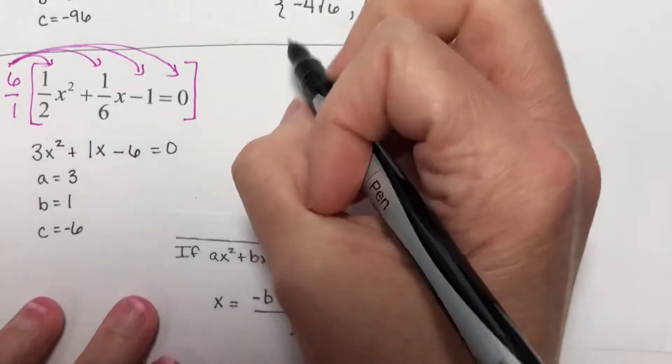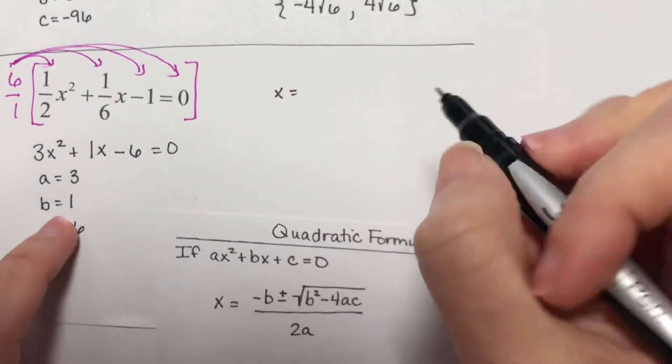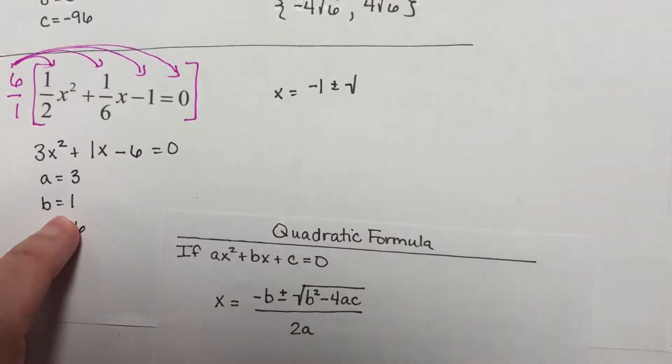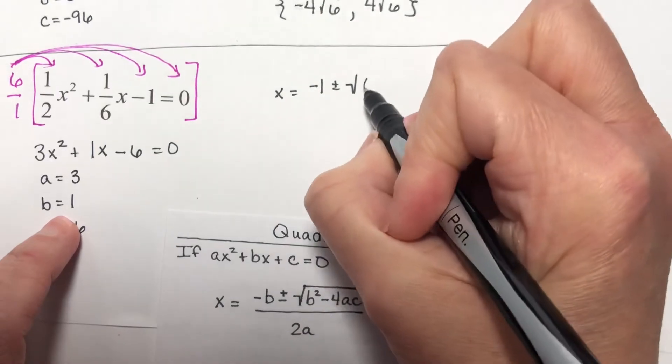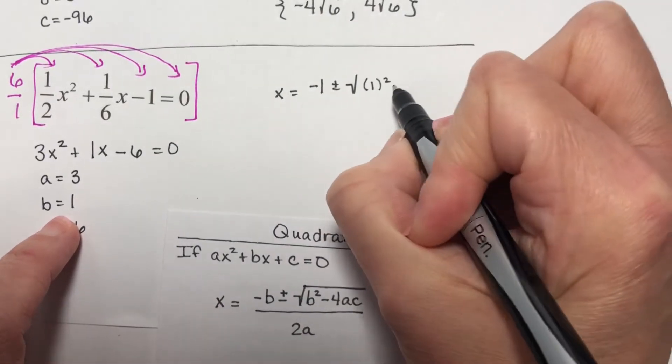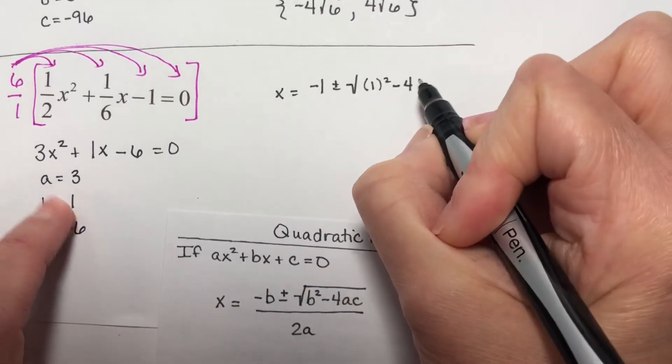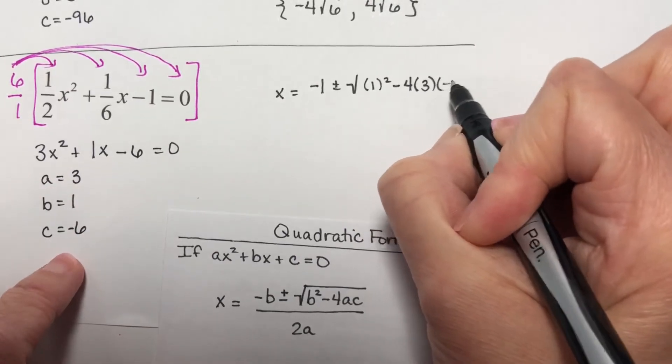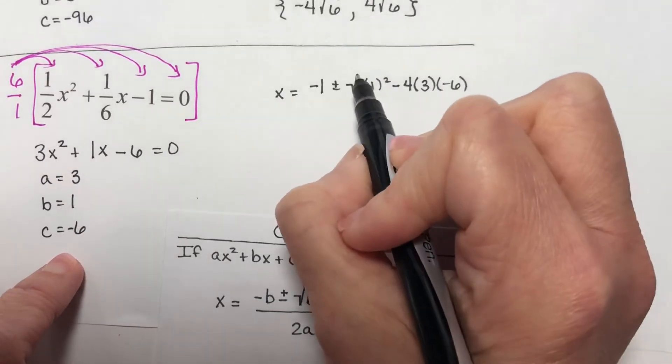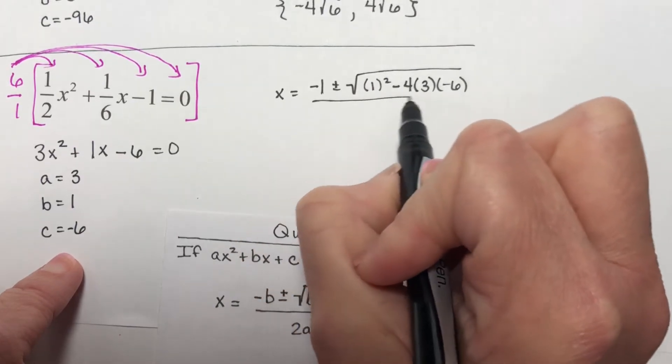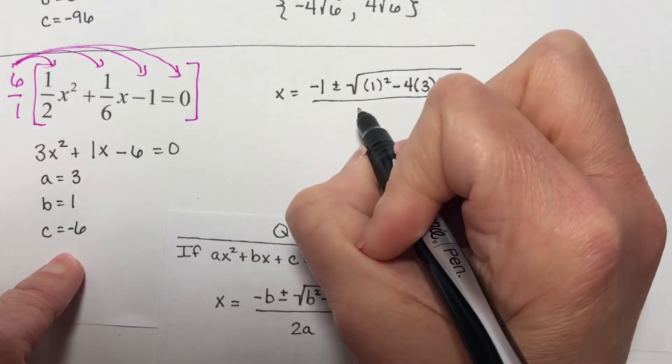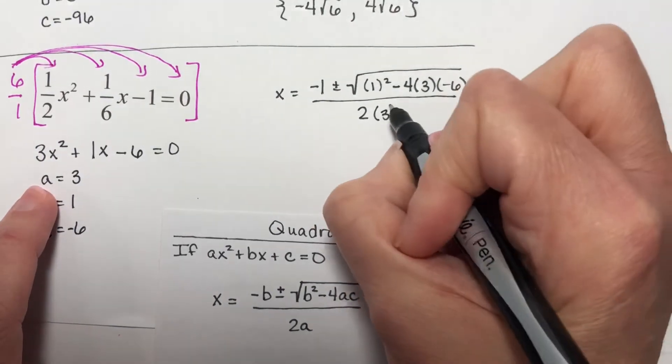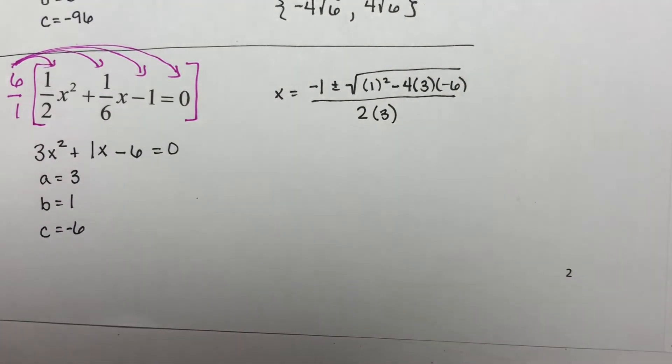x equals negative 1 plus or minus the square root of b squared, so 1 squared, minus 4 times a, which is 3, times c, which is negative 6. And this is all over 2 times a, and a is 3. Okay, so let's keep going.